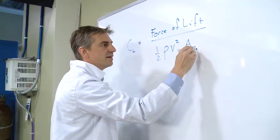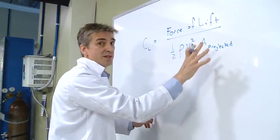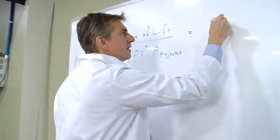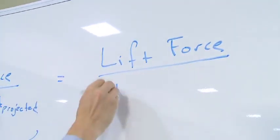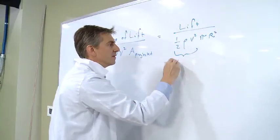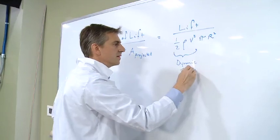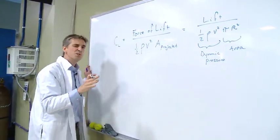And this is the projected area. In this case, we're dealing with a sphere. So, this will be lift, and the projected area will still be the dynamic pressure times the area of the projected area of the ball.